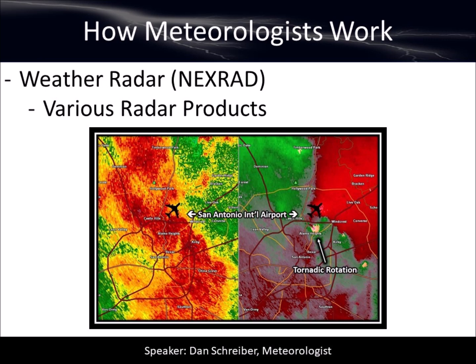Weather radar, unlike satellite, actually uses radio waves to basically ping off of hydrometeors — raindrops or snowflakes in the atmosphere — and return it to the radar base and send it to the meteorologist. Anybody who's got a phone can pull up a radar. Meteorologists don't look at any different radar products than anybody else could look at. We might have different programs that show it a little bit differently, but it's the same radar.